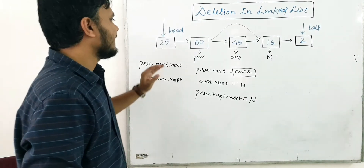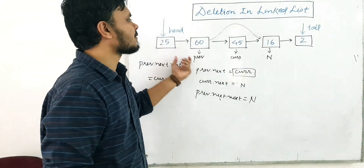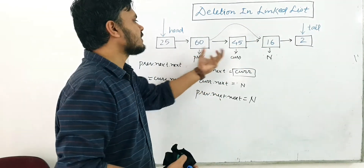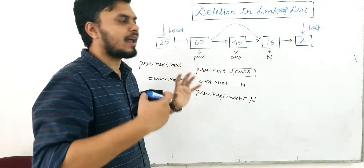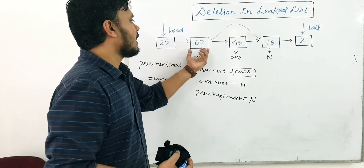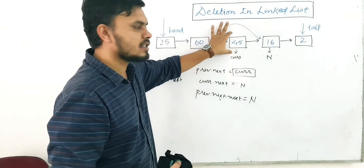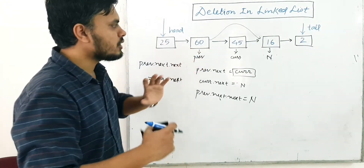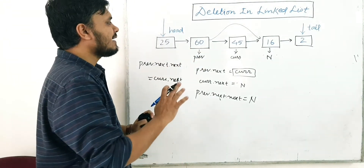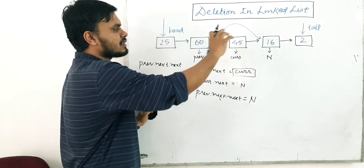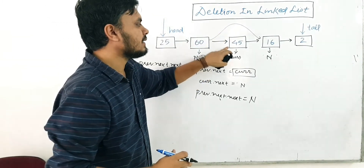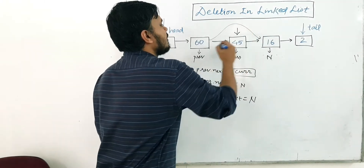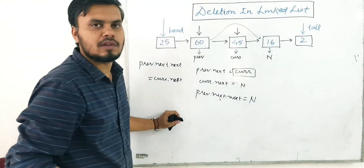There's one problem. In a singly linked list, you only have address pointers for the next node — you are not allowed to fetch the previous node. Once you've moved beyond a node and reached the next one, you can never go back. The solution is that while iterating, instead of stopping at the item we're searching for, we stop one node before it.